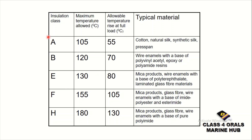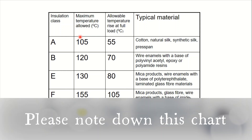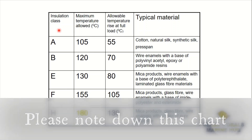This is the chart for the insulation class, along with the column of maximum temperature allowed in degrees centigrade, and at full load, the allowable temperature rise. In the last column, you can find the typical material for each insulation class.